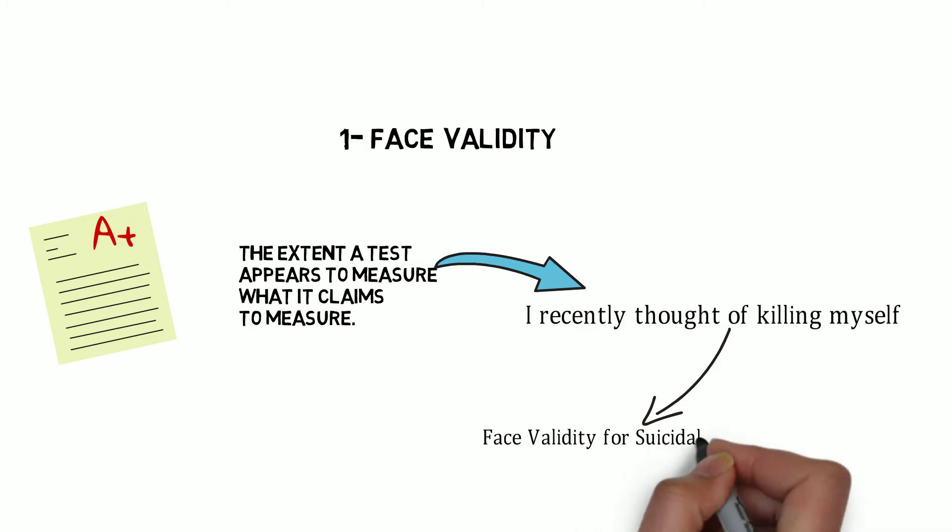For example, the item 'I recently thought of killing myself' has obvious face validity as an item measuring suicidal cognitions. However, items on tests with clear face validity are more vulnerable to social desirability bias — where individuals may manipulate their responses to deny or hide problems, or exaggerate behaviors to present a positive image of themselves.